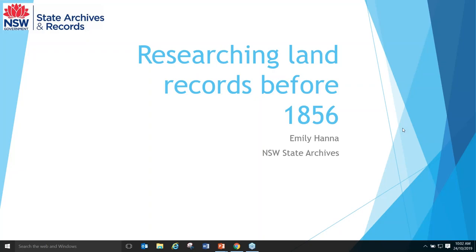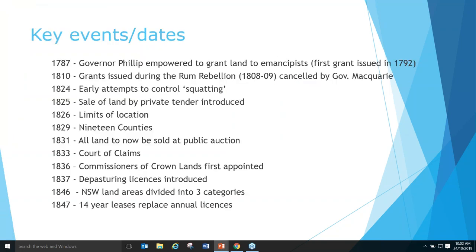Good morning everyone. This is the webinar for researching land records before 1856. My name is Emily Hanna and I'll be taking you through this webinar today. The first thing we're going to look at is some key events and the dates they took place in terms of pre-1856 land. Governor Phillip, before he came to New South Wales, was empowered to grant land to emancipists — those people who were free or became free — and didn't issue his first grant till about 1792.